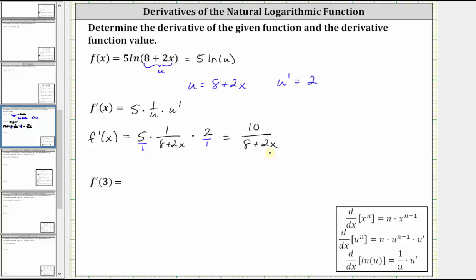But this fraction does simplify because 10 and the quantity eight plus two x have a common factor of two. To show this, let's write 10 as two times five. Now we'll factor two from eight plus two x, which gives us two times the quantity four plus x.